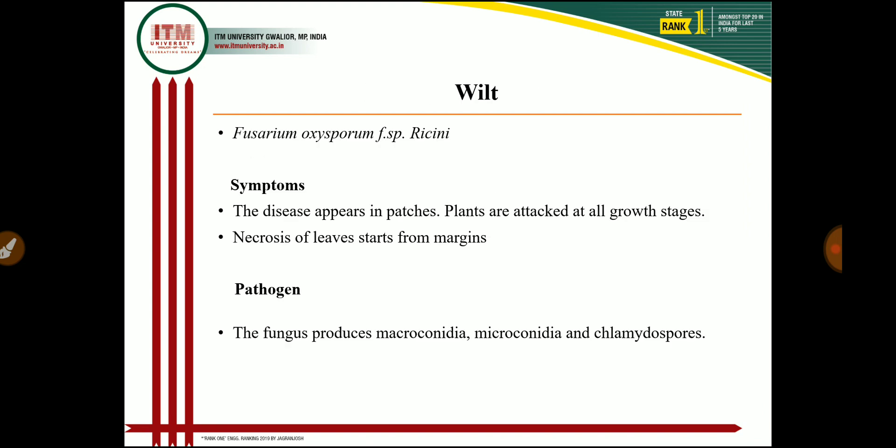The first disease is wilt of castor, caused by Fusarium oxysporum f. sp. ricini. These are very important diseases in castor crop and almost 10 to 15 percent yield losses occur. These diseases are mainly prevalent in Madhya Pradesh, Chhattisgarh, and Rajasthan, where the castor crop is most prone to attack by Fusarium oxysporum. The disease appears in patches and plants are attacked at all growth stages.